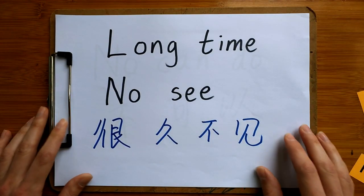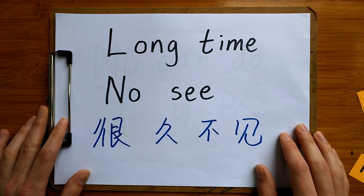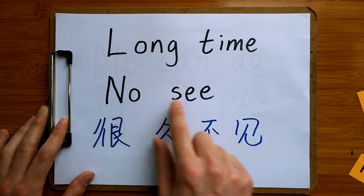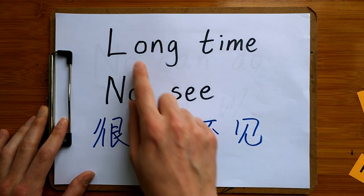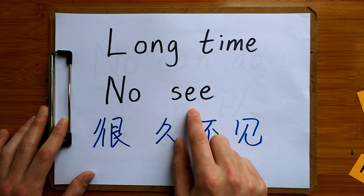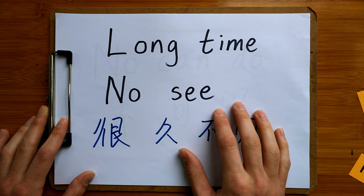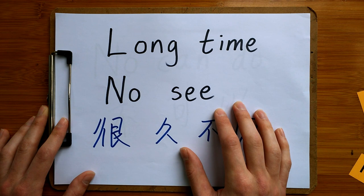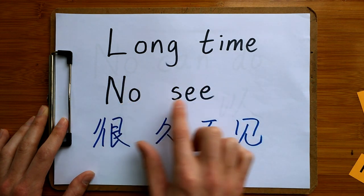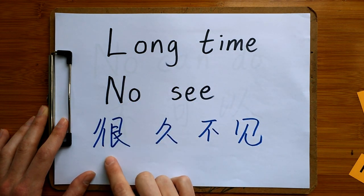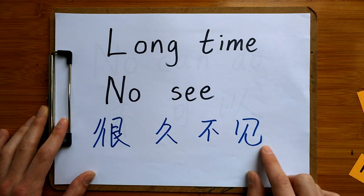The first one I'm sure you have heard before: "Long time, no see." This is used when you haven't seen somebody for a very long time and you see them — you could say, "Long time, no see." This comes from the Chinese phrase 很久不见.